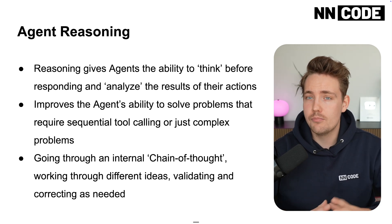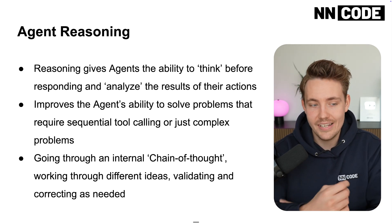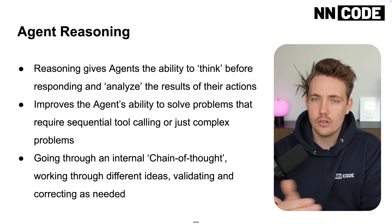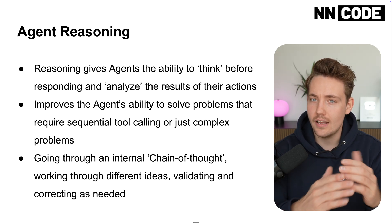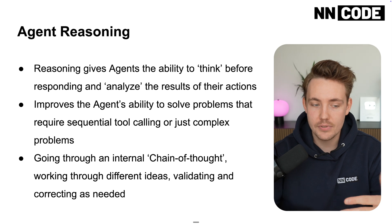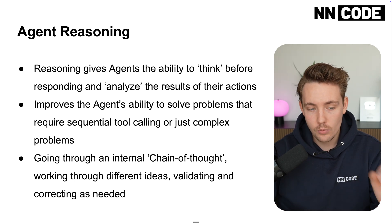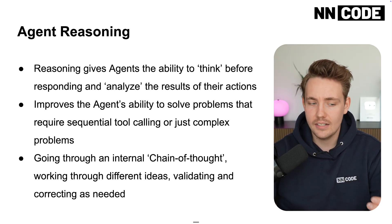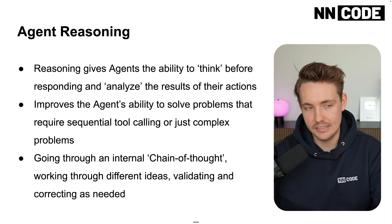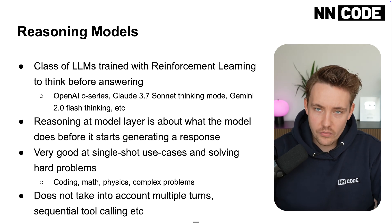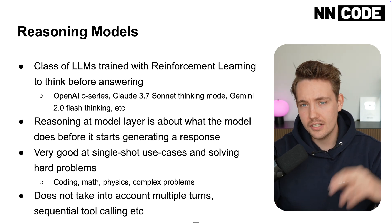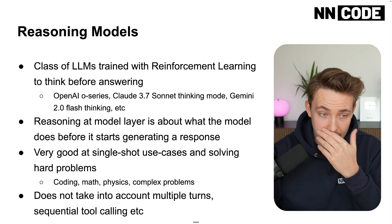This also applies when we have multiple agents working together in a team. Going through an internal chain of thought means thinking about each step, working through different ideas, validating, and correcting as needed. We can have reasoning at different levels — reasoning models, reasoning agents, and so on.